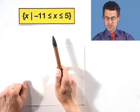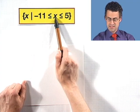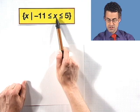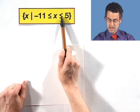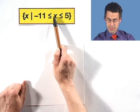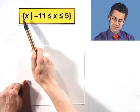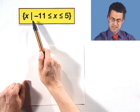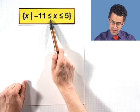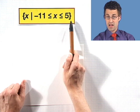Now what's this condition? Well this condition means that it's all the x's that satisfy this collection of inequalities. The x's are less than or equal to 5, and at the same time greater than or equal to negative 11. So if you were to read this out, we'd say this is the set of all x such that x is greater than or equal to negative 11 and less than or equal to 5.